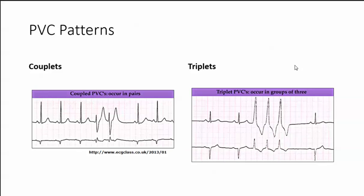Let's look at some PVC patterns. The first one is a couplet — that's when you have two PVCs side-by-side. Triplets are three sequentially. Remember, we're talking about PVC patterns, but this pattern can also happen with PACs and PJCs.